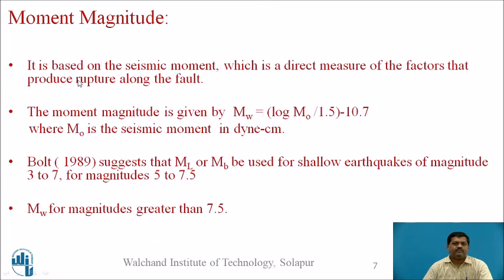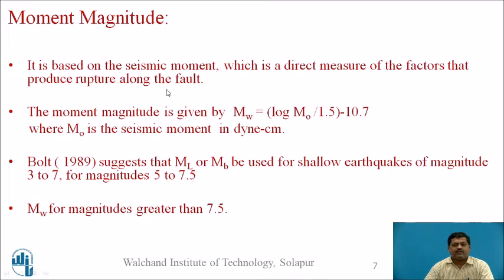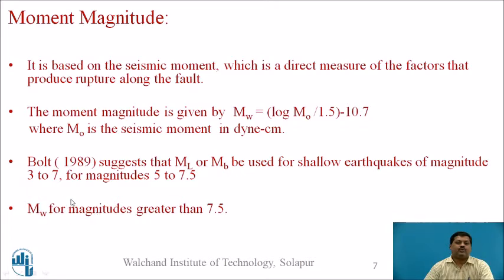Next is moment magnitude, which is based on seismic moment. It is the major scale of measurement for earthquakes and is a direct measure of the factors that produce rupture along the fault — considering fault displacement and the force times displacement moment. The formula is: Mw = (log M0 / 1.5) − 10.7, where M0 is the seismic moment in dyne-centimeters. Moment magnitude is used for magnitudes greater than 7.5.